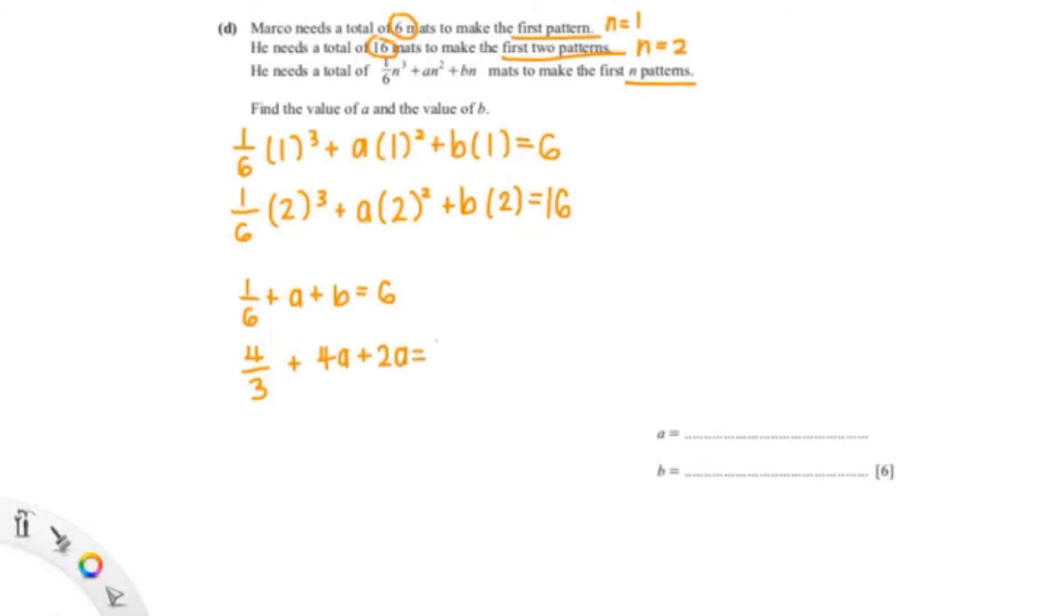Okay so now we can solve it by using simultaneous equations and I think I'm gonna use the substitution method. So let me just make a the subject for this equation, so it's 6 minus 1/6 minus b. So I can simplify that giving me 35/6 minus b.